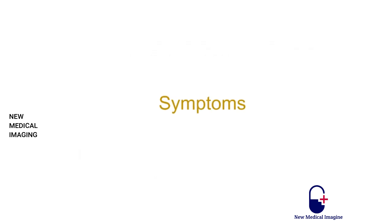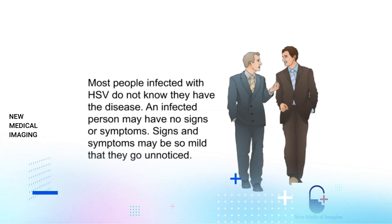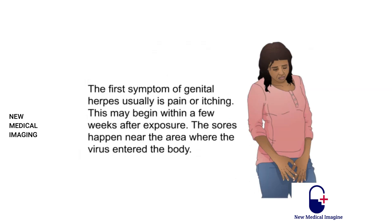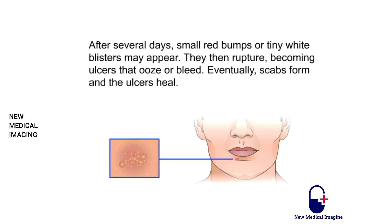Most people infected with HSV do not know they have the disease. An infected person may have no signs or symptoms, or symptoms may be so mild they go unnoticed. The first symptom of genital herpes is usually pain or itching, beginning within a few weeks after exposure. Small red bumps or white blisters may appear, then rupture into ulcers that ooze or bleed. Eventually, scabs form and the ulcers heal.